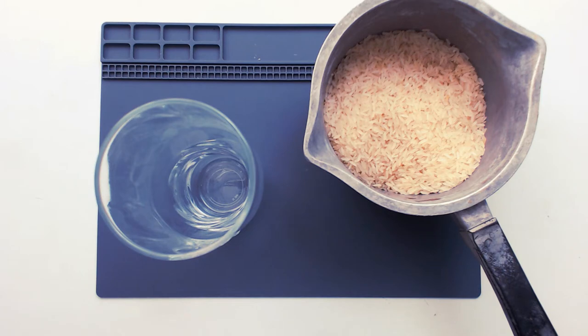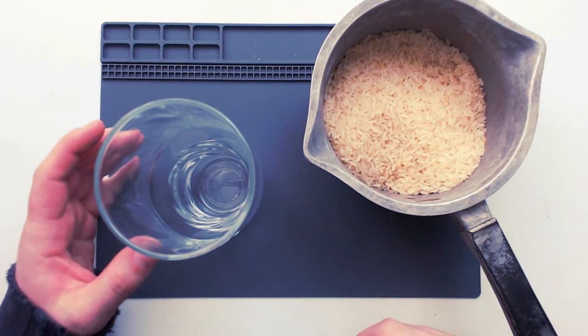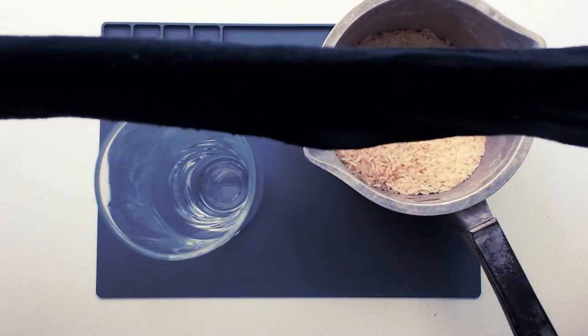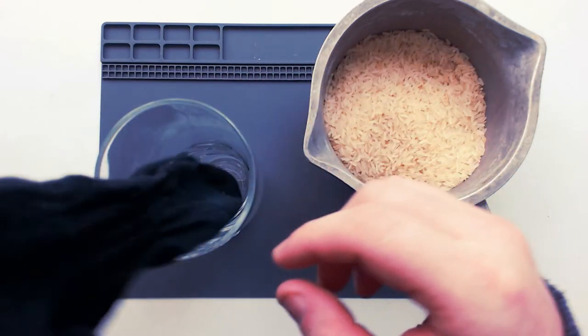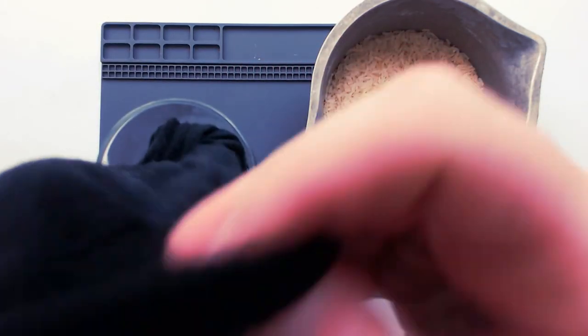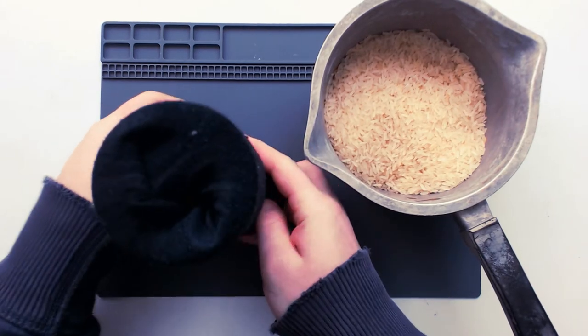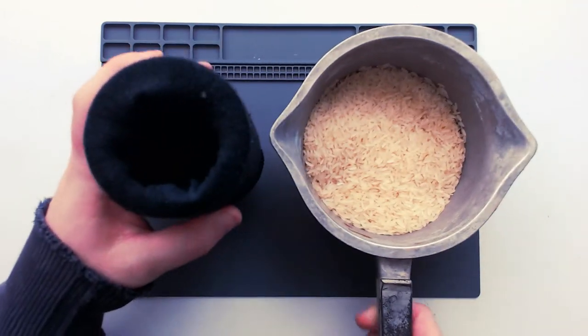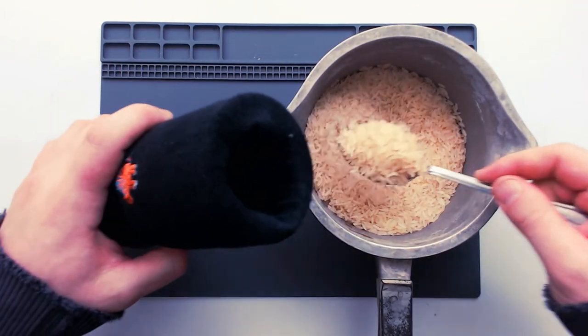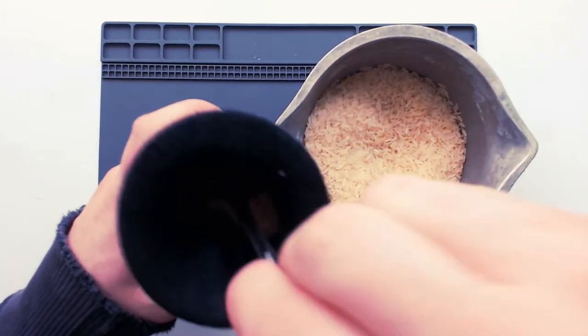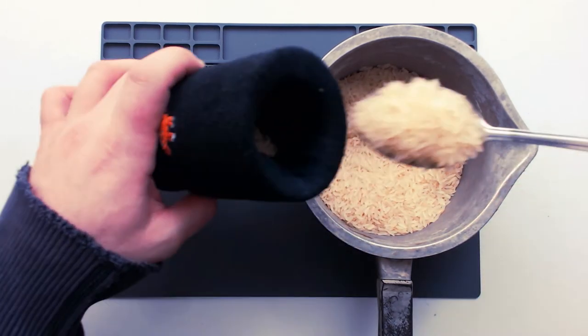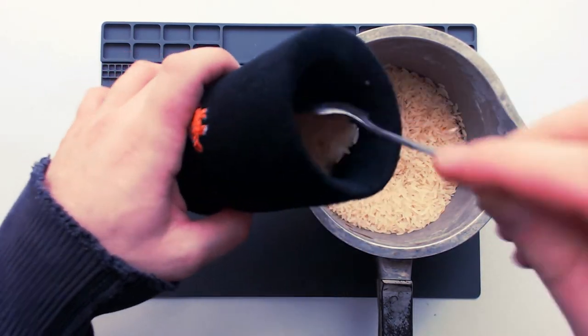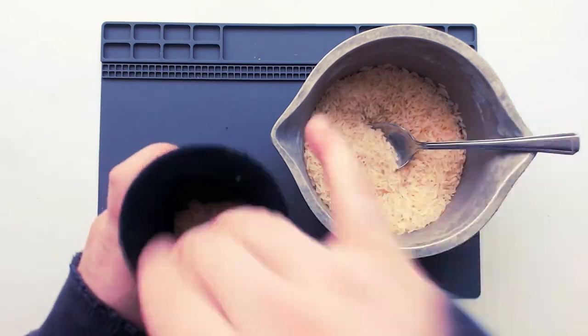And basically all you need to do really, it's pretty simple. Get yourself an old crusty sock that I stole from my stepson. I'm going to use this cup to begin with, I know it looks really dodgy but I promise you it's all above board. And what we're going to do, I'm going to get rice absolutely everywhere, is spoon in some rice into your sock. So I'm going to go ahead and do that now.